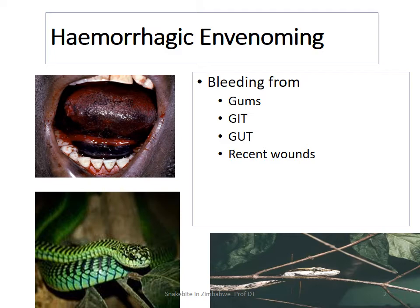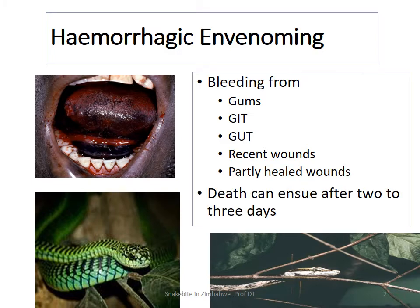You also get bleeding from recent wounds. You'd have thought a wound was healing well, then it starts bleeding again if you're bitten by a hemorrhagic envenomation snake, as well as partly healed wounds. Death can ensue after two to three days, sometimes even longer, depending on the type of management the patient is getting. It's not a very nice envenomation. When someone is bitten, they might not even see any swelling. There might be some blood just oozing out of the bite site. You might go to bed, wake up in the middle of the night to find blood on the pillow. That's how this is — almost like a silent death, so to speak.